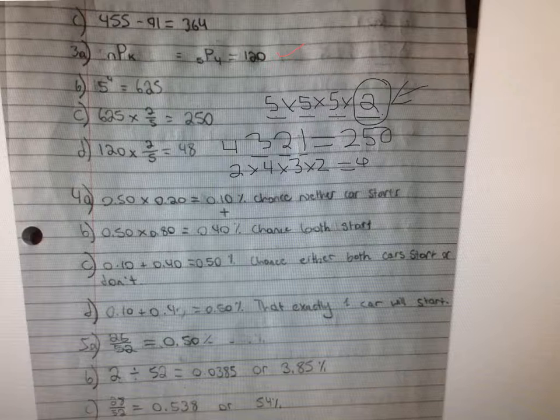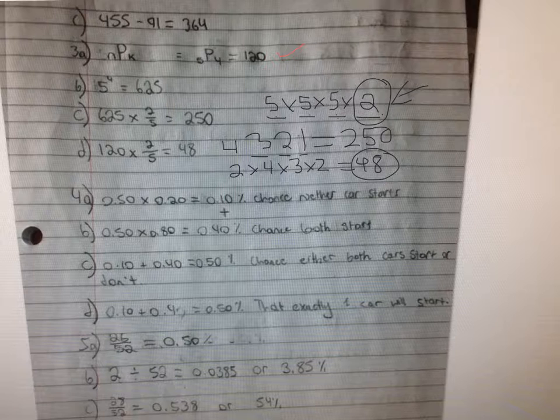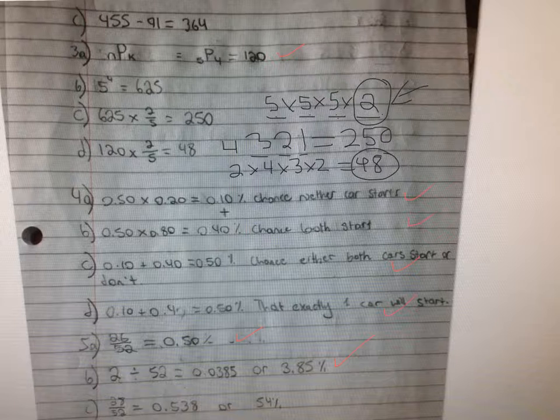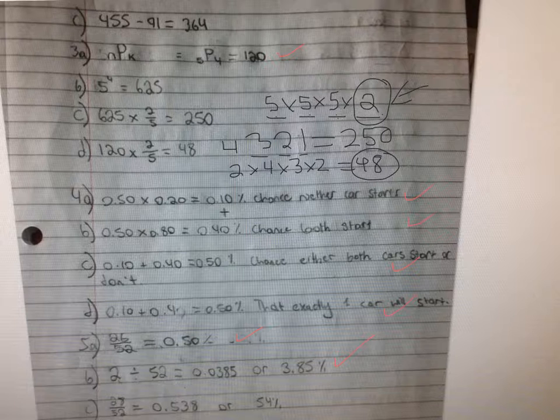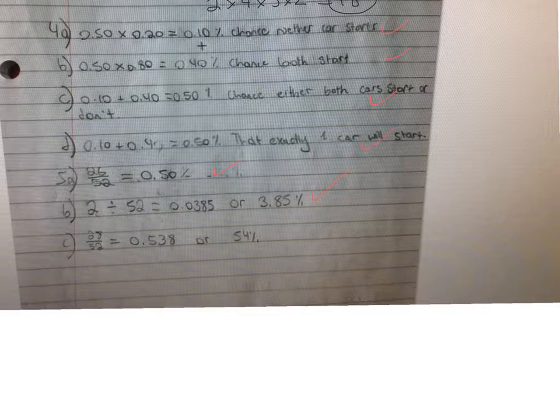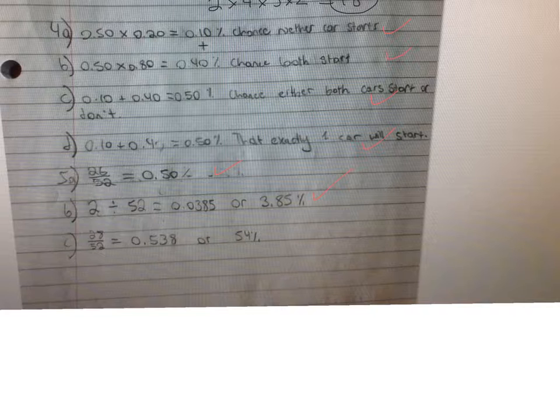Now number four is all correct. You did everything correctly there. And number five, this one's right and this one's right. And for 5C, they are asking - okay, so you have the right answer for 5C, I just don't know how you arrived at it because I can't see your work. So I'm just going to go through the process for how you would do it, to make sure that you did it that way and just to show you.